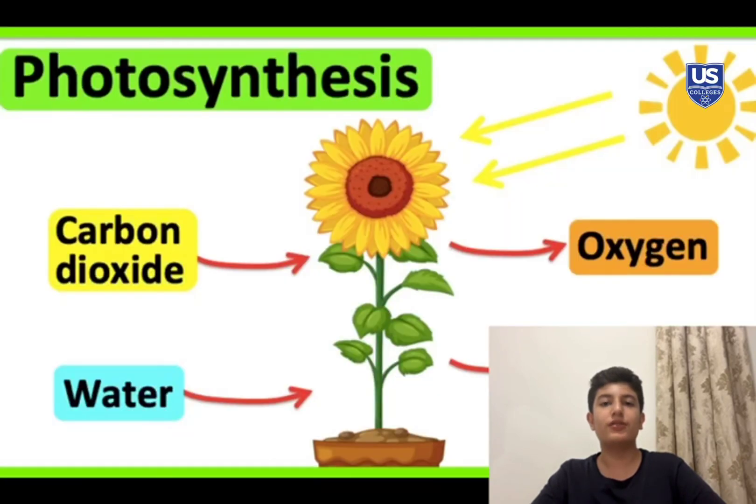As we can see in this picture, plants use water which they get from the soil and carbon dioxide which they get from the air, and they release oxygen and energy which they get from the sunlight.